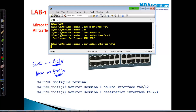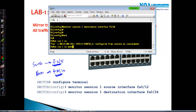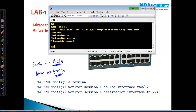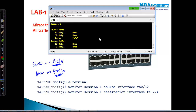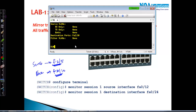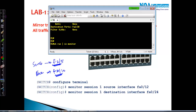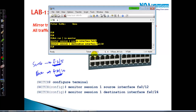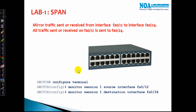To verify the configuration, use the command 'show monitor session 1'. You can see that monitor session 1 is created with source F2/5 sending and receiving traffic, and destination F2/10. You can also use 'show running-config | include monitor' to verify the configuration. This demonstrates the basic SPAN lab configuration.